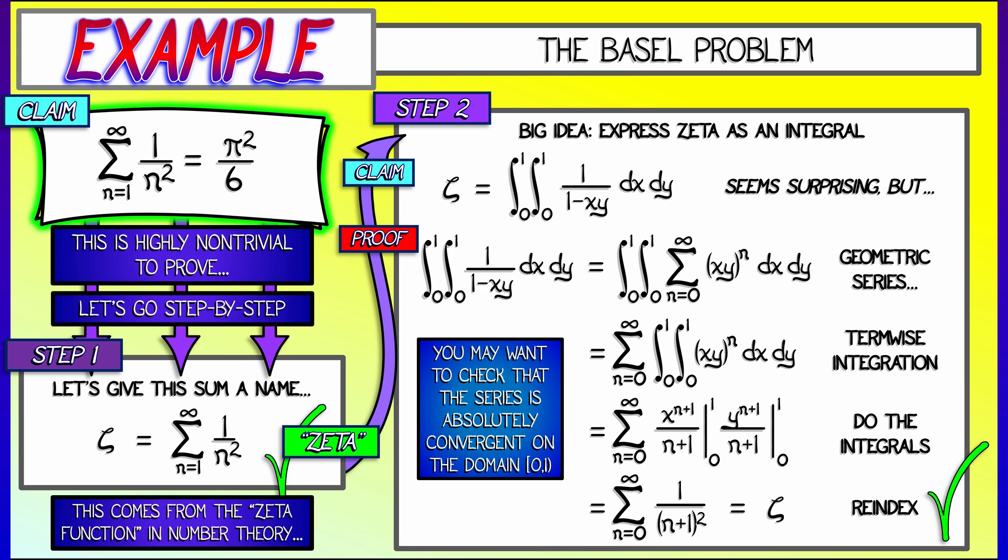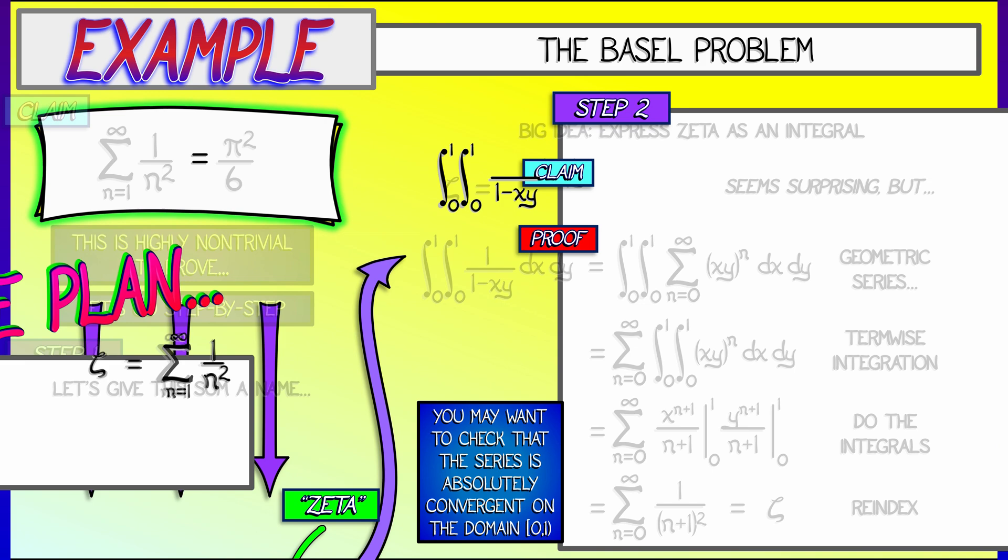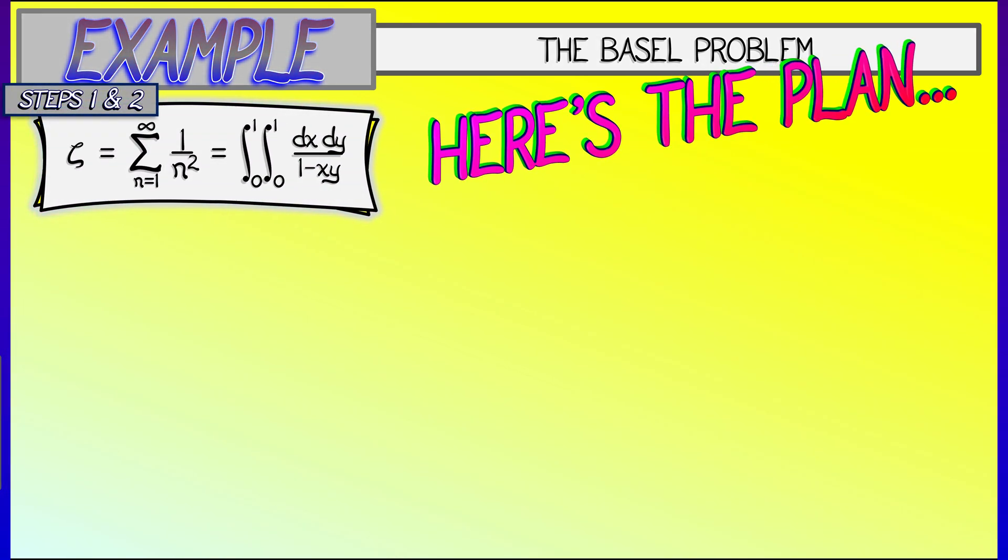Okay, great. Now that we have zeta expressed as a double integral, what do we do? Well, here's the plan. It's kind of complicated.